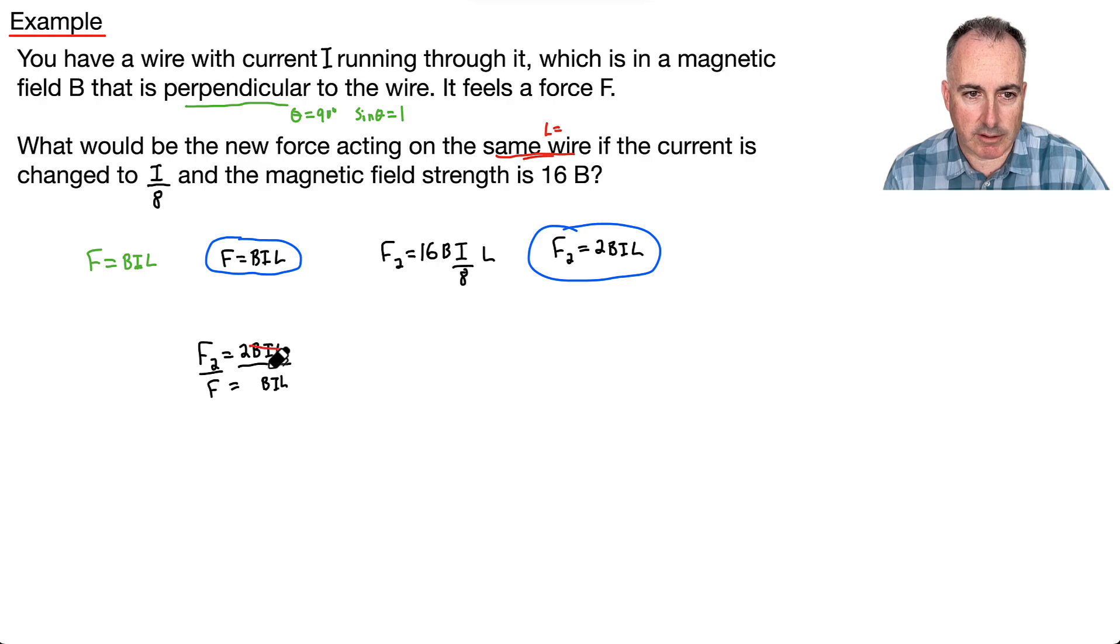Look, the BILs cancel out. So those who are used to these won't even bother writing those, but I just do. So there we go. So we've got F2 over F then, just equals 2.